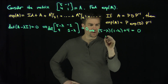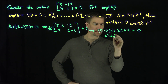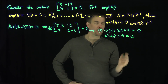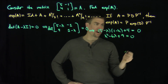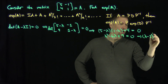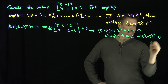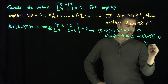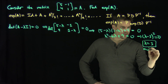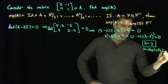If we foil this out, we get λ² - 6λ + 5 + 4 = λ² - 6λ + 9 = 0. That's a perfect square: (λ - 3)² = 0. So λ = 3 is my only eigenvalue, but it has multiplicity two.